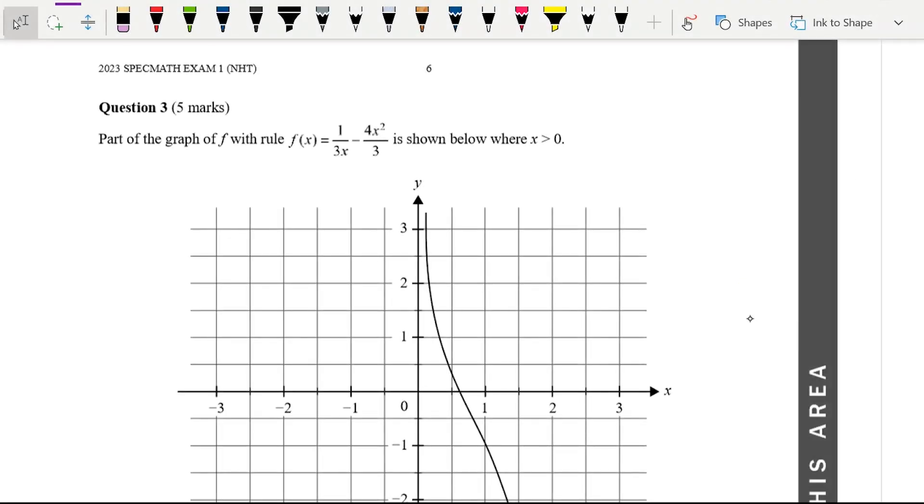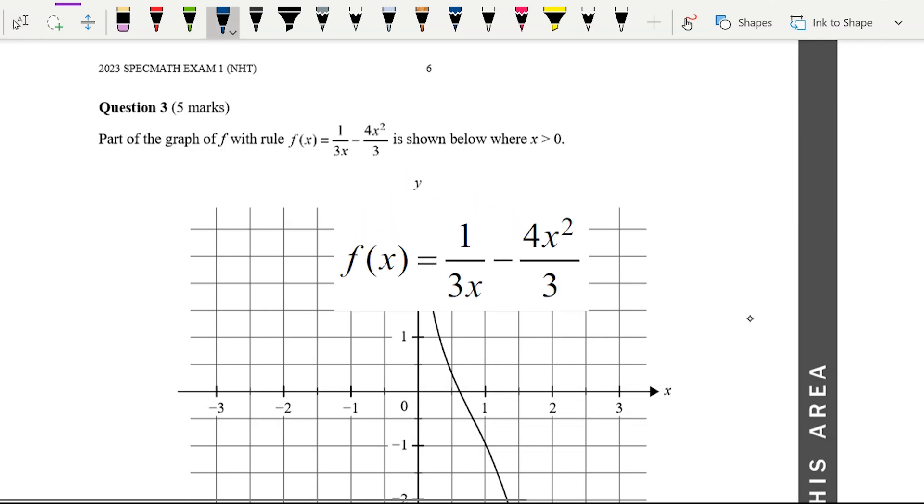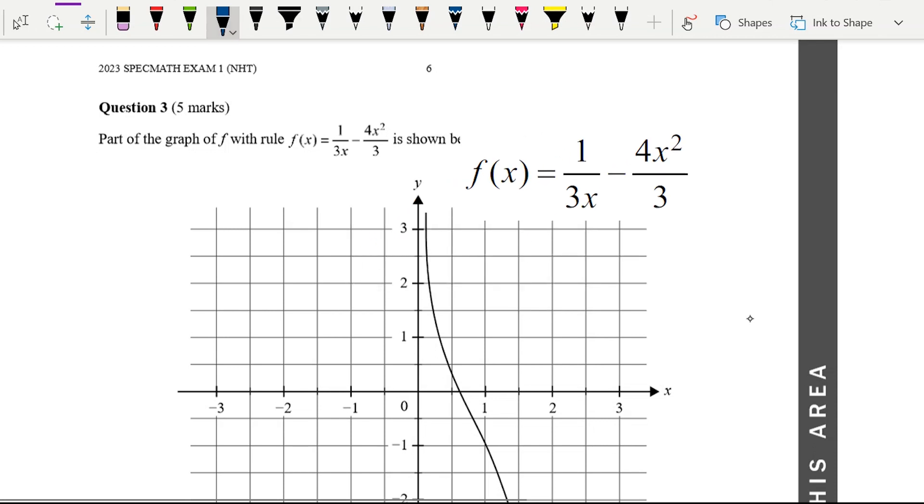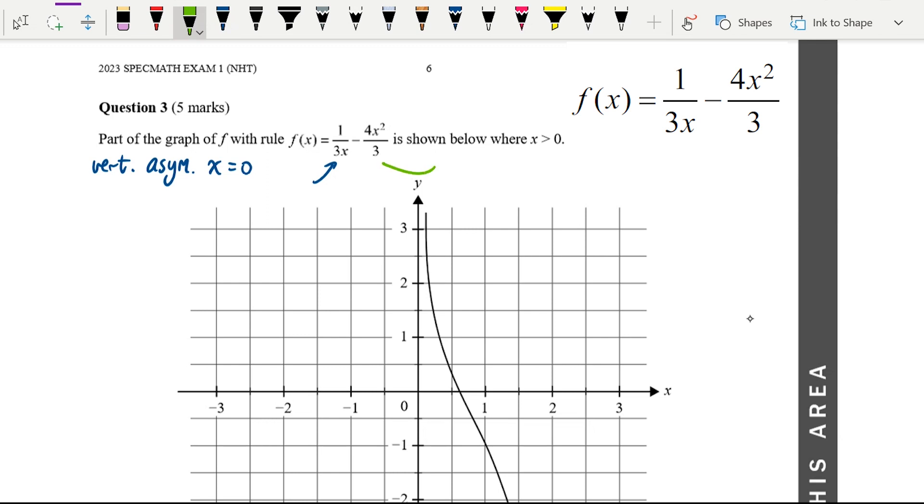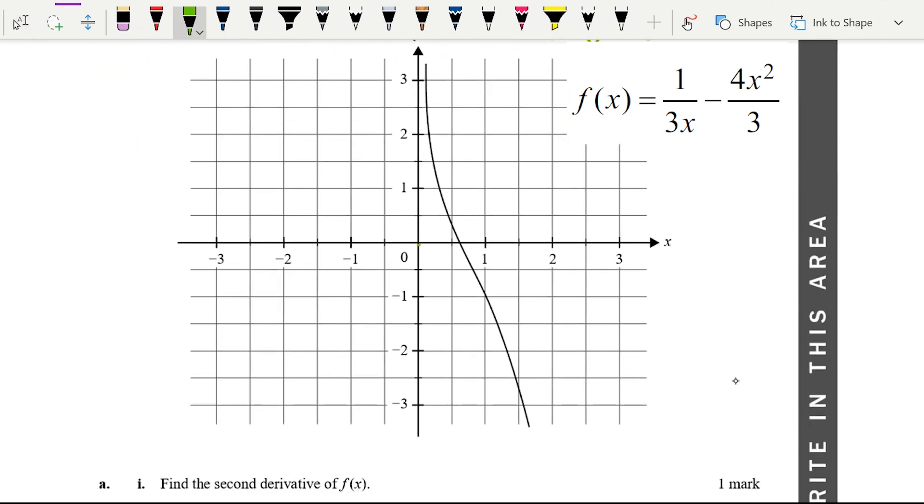The example that I'll work through for rational functions is from the 2023 Northern Hemisphere exam, exam one. The graph was f of x equals 1 over 3x minus 4x squared over 3. With a rational function like this, first thing you're looking for is when the denominator is zero—that function will be undefined and generally would have an asymptote. That's going to happen here when x is zero; you're going to have a vertical asymptote. As x approaches infinity, this term is going to approach zero and what we'll be left with is negative 4x squared over 3. So that is your non-vertical asymptote. In this case, it's a parabola at y equals negative 4x squared over 3.